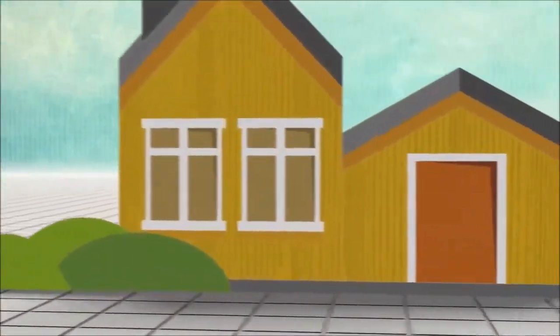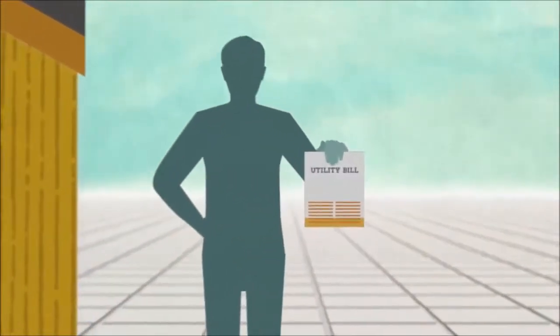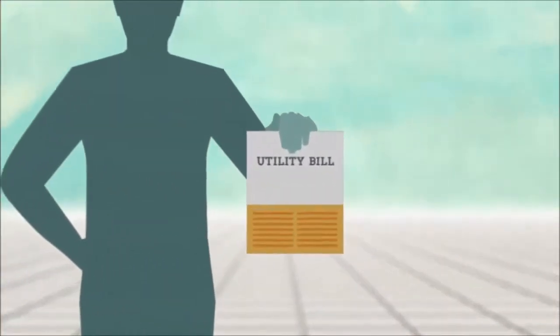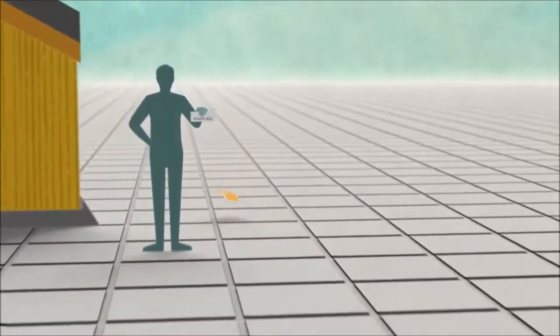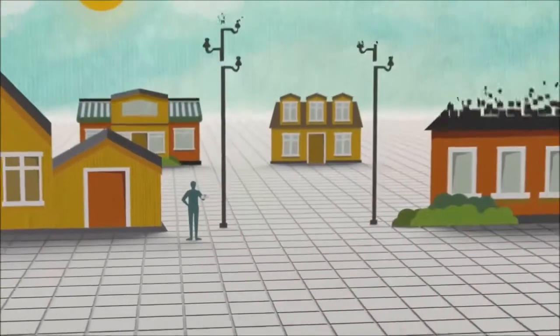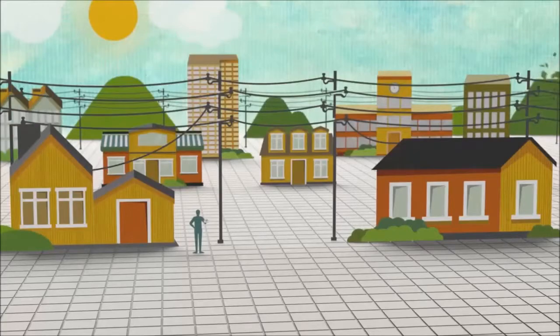Most of us get electricity from our local electric utilities at the flip of a switch. Part of our electric bill goes to pay the utility for the amount of electricity we use. Another part goes to support the cost of building, operating, and maintaining the grid, or the infrastructure that reliably delivers this power to us.